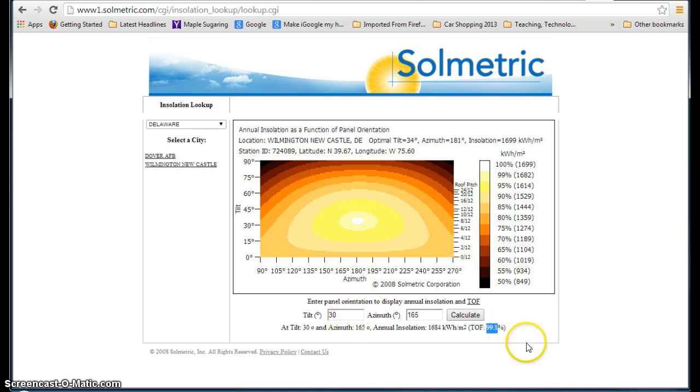Now, it's important to remember that this does not include shading or any of the other derating factors that you may be using. It just tells you, based on your tilt and your azimuth, what your reduction in output is going to be as a percentage.